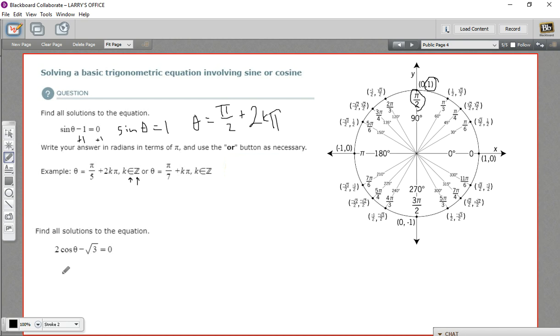All right, let's try another one. This one's got a little bit more work to it. We've got 2 times the cosine of theta minus the square root of 3. So first, we'll try to solve for the cosine of theta. So I'm going to add the square root of 3 to both sides. We get 2 cosine theta equals the square root of 3. And then we just divide by 2 to solve for the cosine of theta. So we get the cosine of theta equals the square root of 3 over 2.